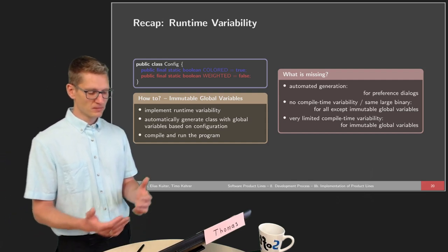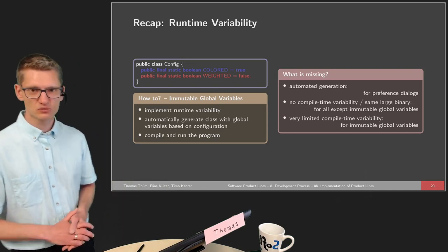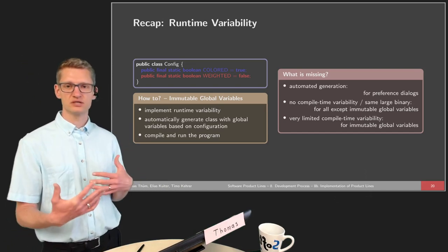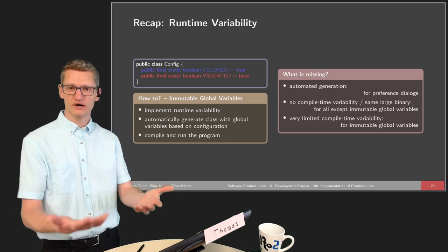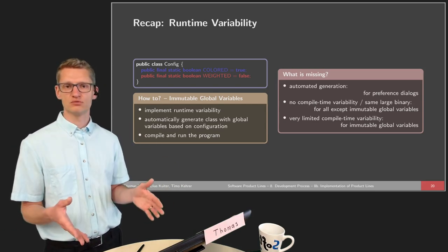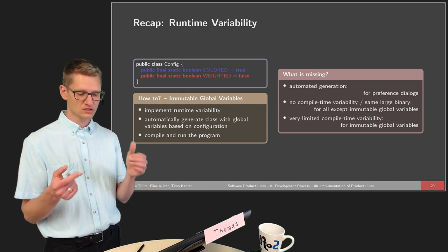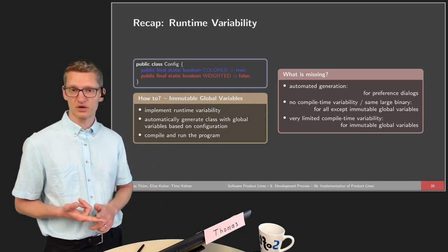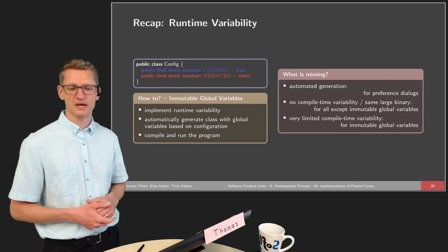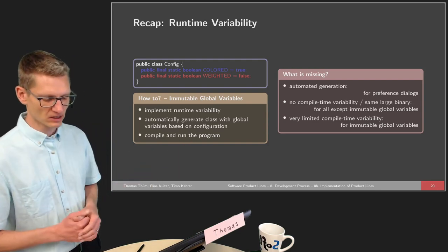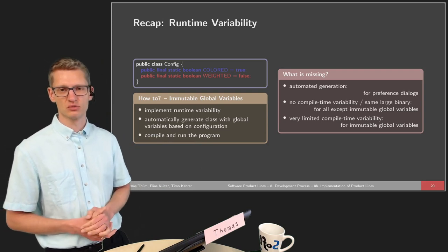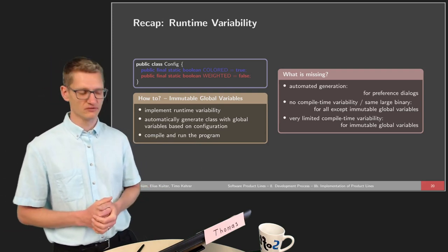This has some limited advantages because the compiler can remove some dead code and simplify some local statements. What is missing with all those runtime techniques involves two dimensions: one is how to provide the configuration, and the other is how it is implemented and realized. We talked about global variables and method parameters that are passed. There are more techniques, and a special case of global variables is immutable global variables.